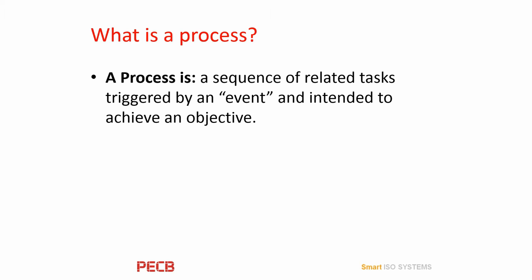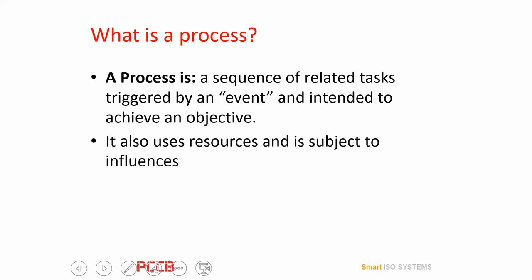A process is a sequence of related tasks triggered by an event and intended to achieve an objective. An event can be an action, a thought, a decision, or a diary date — so a process can be both reactive and proactive. A reactive example would be responding to a sales inquiry. A proactive example would be recruiting new staff by seeing the need beforehand. All processes consume resources and are subject to being influenced by a number of factors. An example of a resource would be the people employed, and the influencers would be the policies used to run the process.